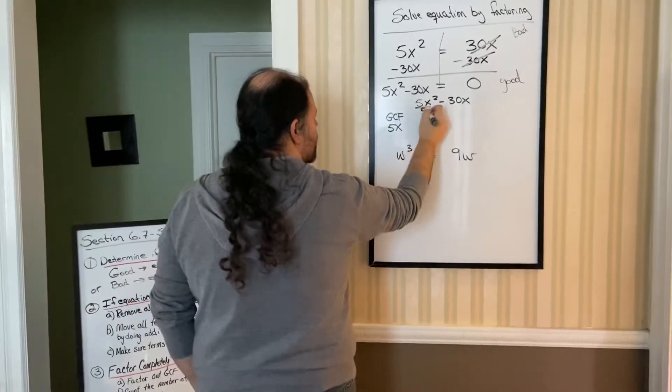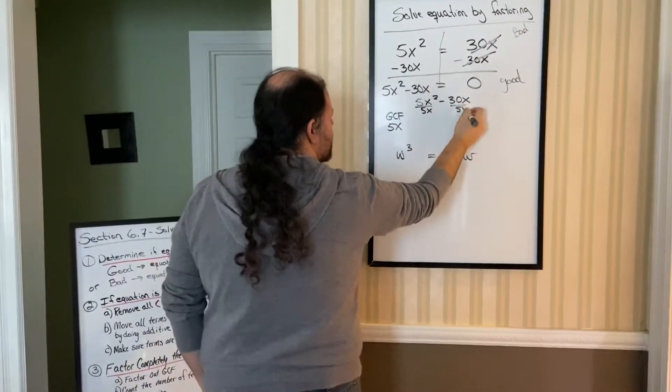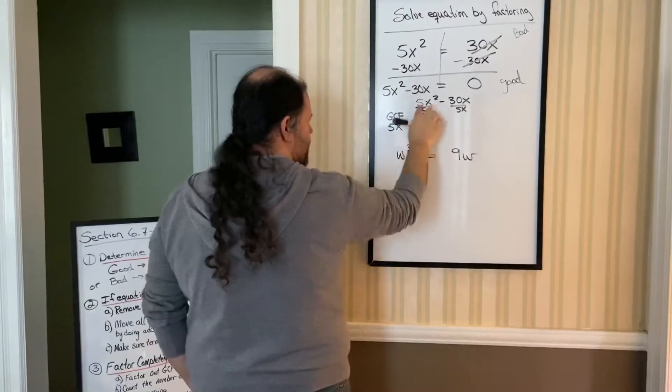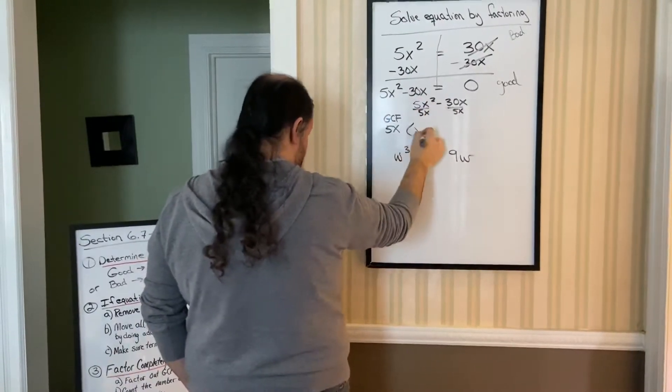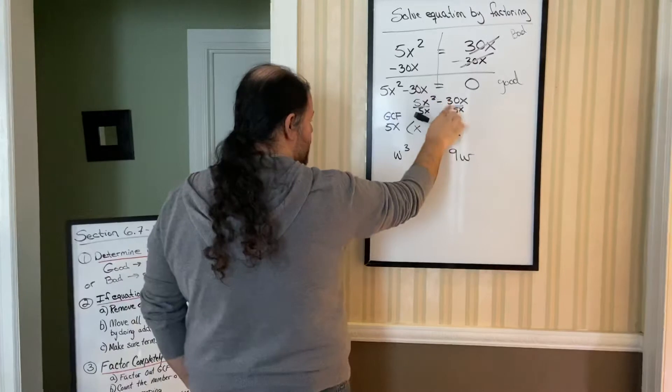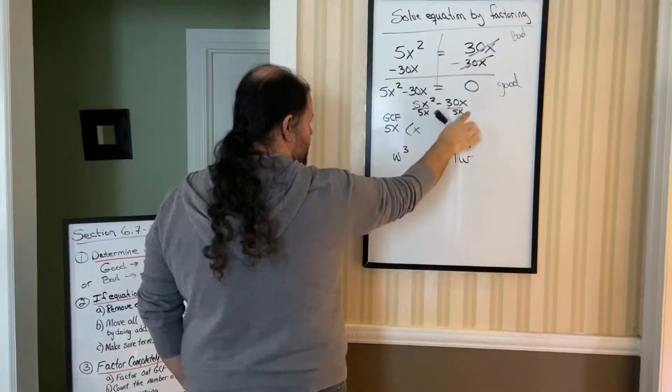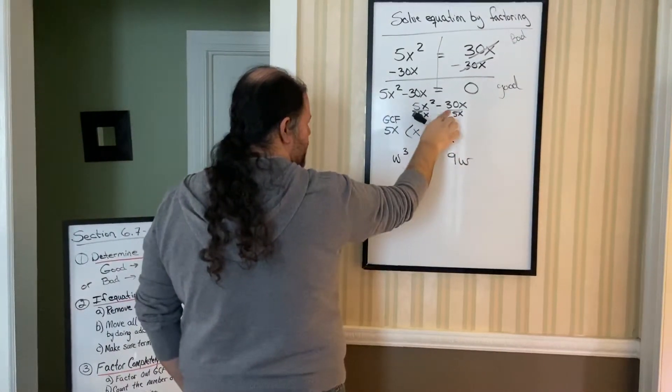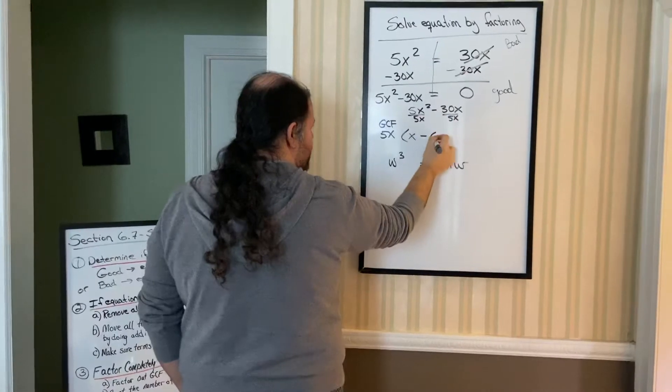So we're going to divide each term by 5x. So my leftovers is going to be just x. Remember, 2 versus 1. And here, well, there's a tie for x's, so no more x's. But negative 30 divided by positive 5 is negative 6.